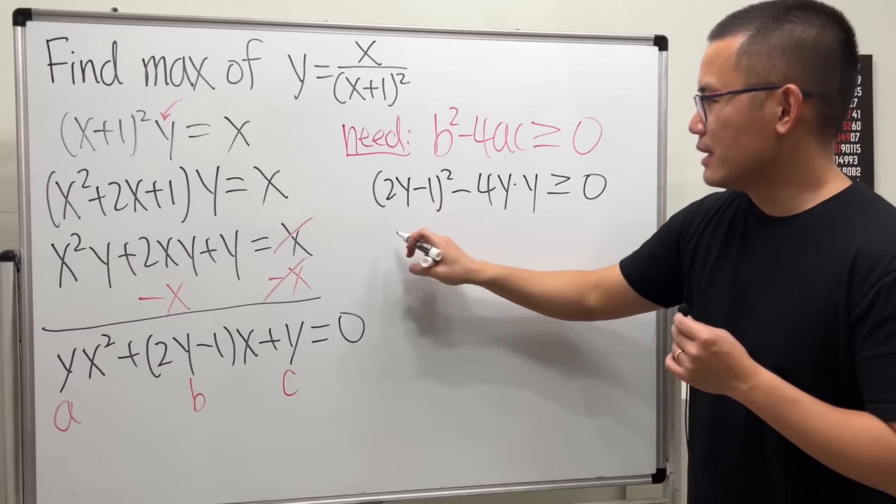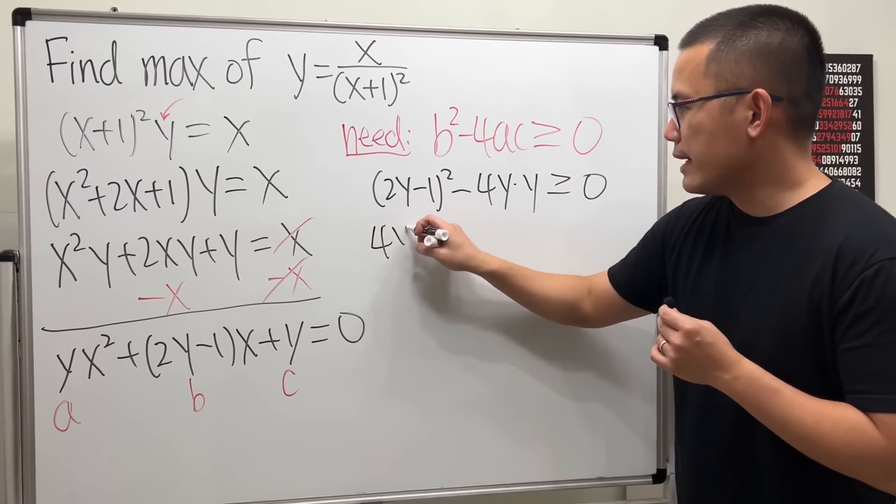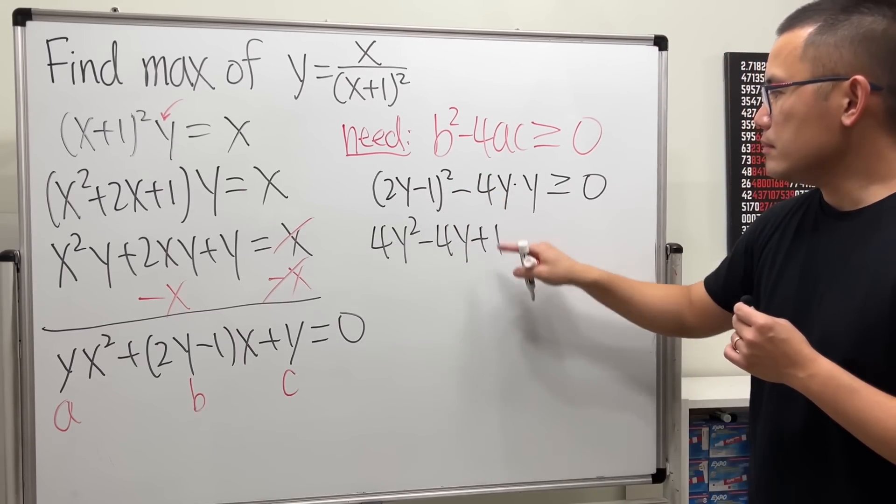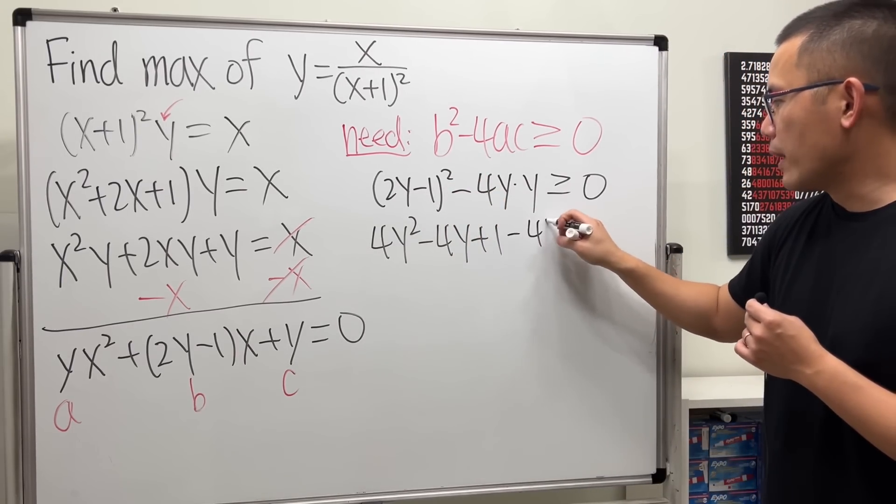Multiply there, we get 4y² - 4y + 1. And this right here is minus 4y².